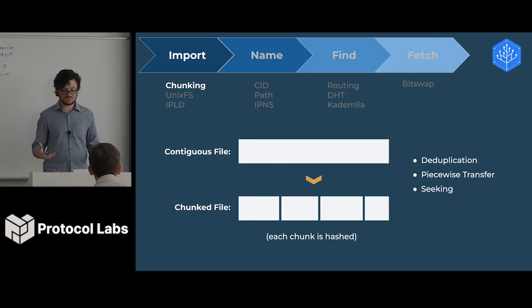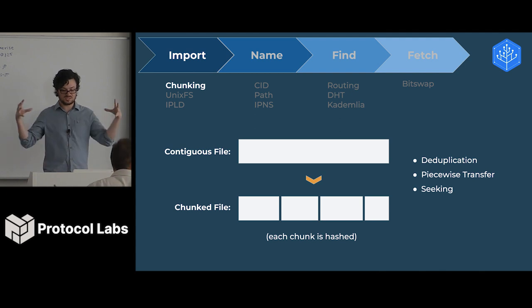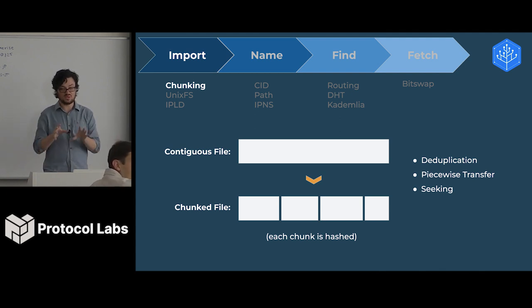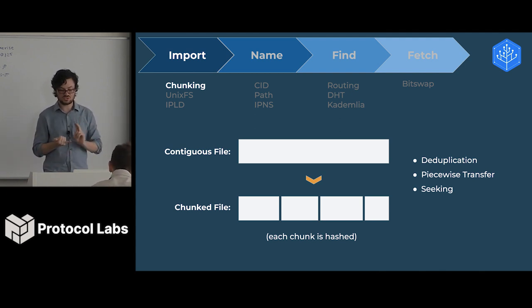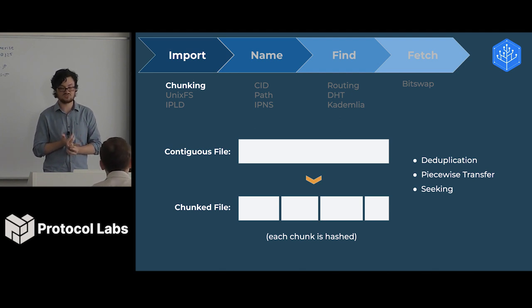The first thing we do is chunk the data. We start with a continuous file and then we break it into small pieces. We do this for deduplication, to allow for piecewise transfer, and to allow for seeking. Each chunk is also hashed.